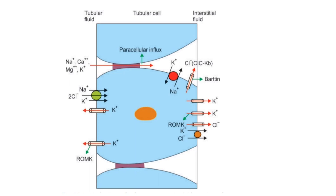Potassium moves back into tubular fluid via ROMK channels and other potassium channels. Chloride moves out into interstitial fluid via potassium-chloride symporter and other chloride channels. Solutes like magnesium, calcium, remaining sodium and potassium move paracellularly into interstitial fluid. Clinically, Bartter syndrome involves a mutation in integral membrane proteins essential for chloride channel function. Patients may also be deaf due to a defect in the stria vascularis of the inner ear, which maintains high potassium concentration in the scala media containing chloride channels.